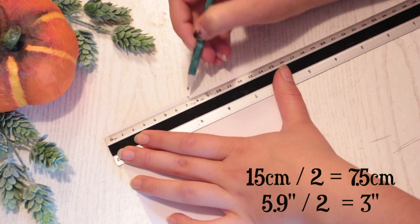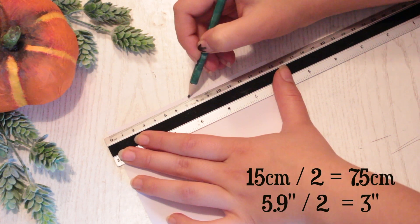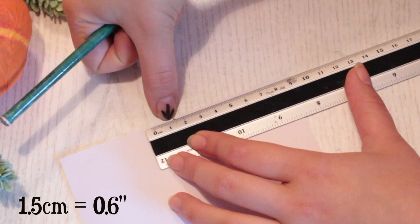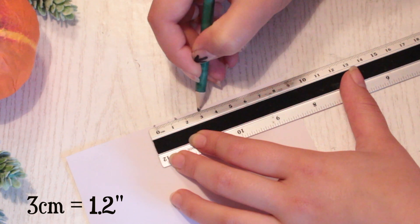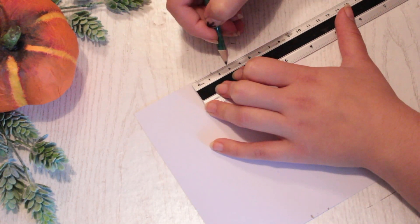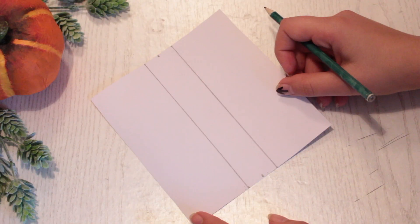Find the middle on the short side of the paper and then make a mark. Then place the marking at 1.5 cm on the ruler and make markings at 0 and 3 cm. Repeat this on the opposite side and make lines between the markings you just made.